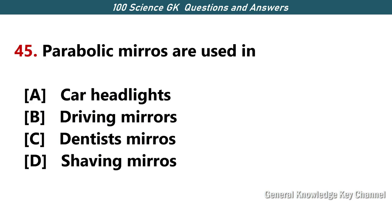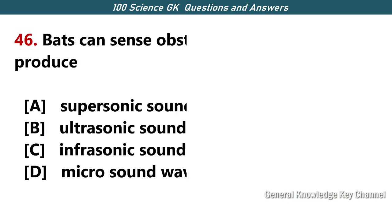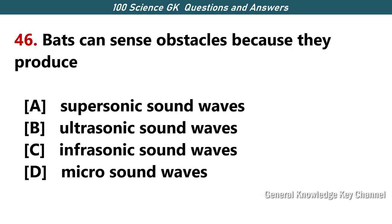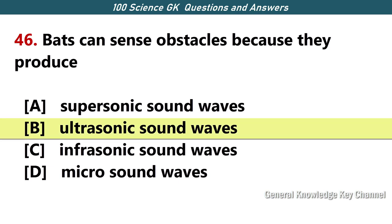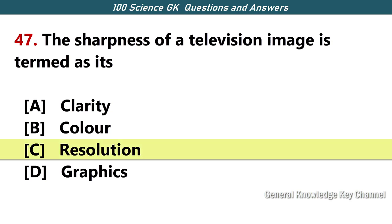Parabolic mirrors are used in — Answer A — car headlights. Bats can sense obstacles because they produce — Answer B — ultrasonic sound waves. The sharpness of a television image is termed as its — Answer C — resolution.